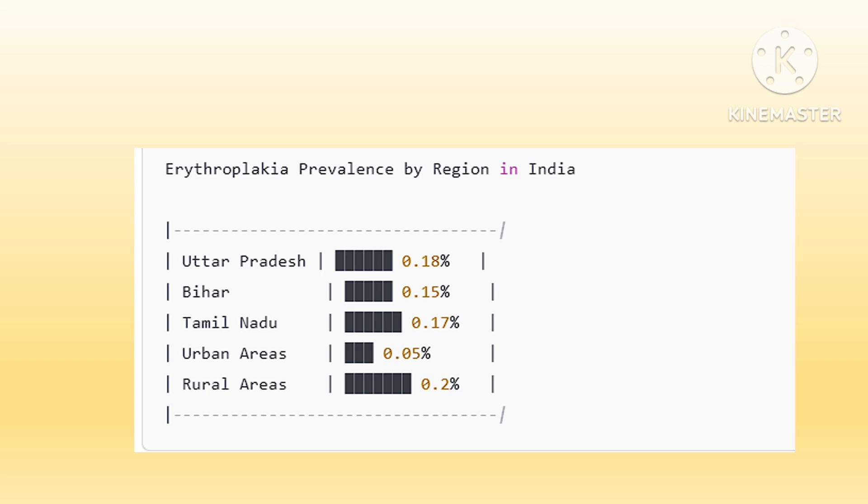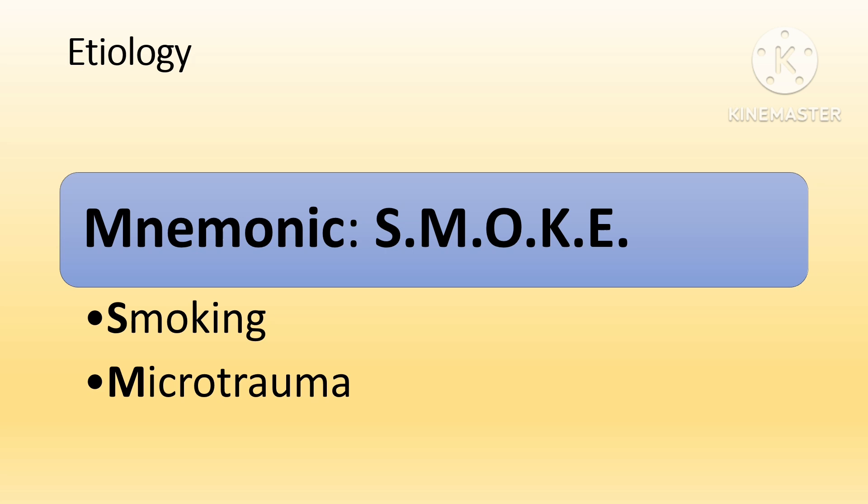States like Uttar Pradesh, Bihar, and Tamil Nadu report higher incidence rates due to the prevalence of tobacco-related habits. Regarding the etiology of oral erythroplakia, it is influenced by various environmental and genetic factors. Smoking — both tobacco and cannabis — is a significant risk factor. The toxic chemicals in smoke can cause irritation and chronic inflammation, which increases the risk of malignant transformation. Repeated trauma to the oral mucosa, such as ill-fitting dentures, sharp teeth, or mechanical irritation, can create an environment conducive to development of oral erythroplakia.